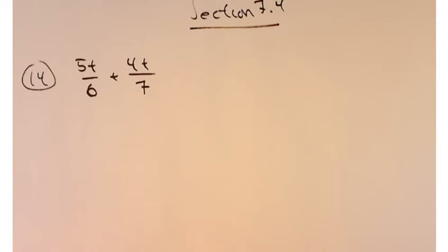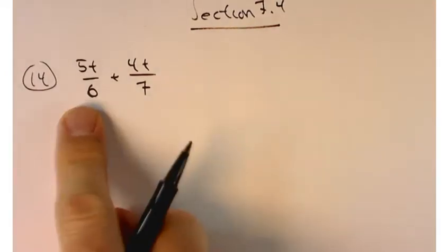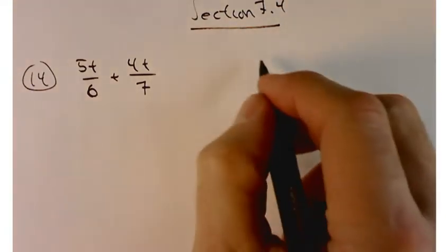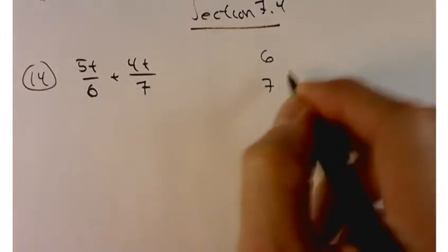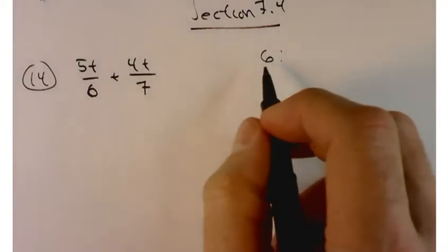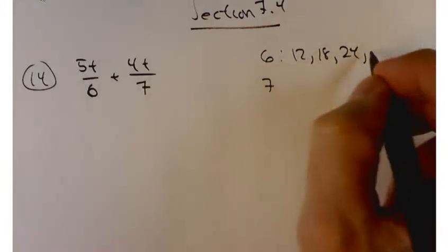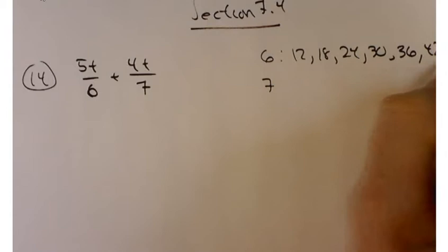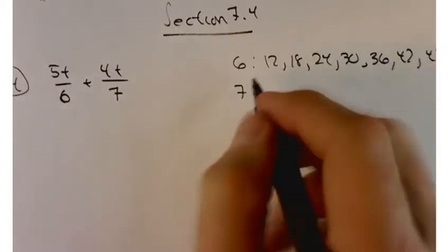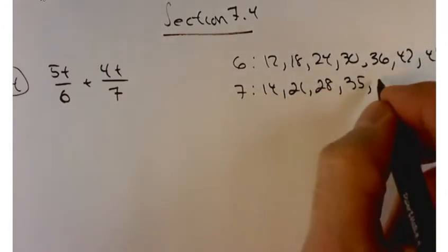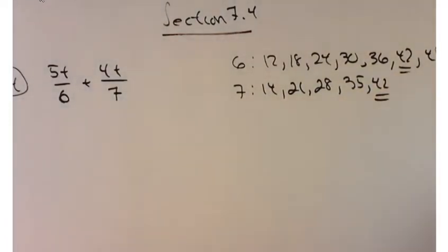We'll begin with problem number 14. We've got denominators of 6 and 7, so it's a simple thing to figure out an LCD. We talked about that in section 7.3. One way to find the LCD is to list multiples: multiples of 6 are 12, 18, 24, 30, 36, 42... and multiples of 7 are 14, 21, 28, 35, 42. We stop here because 42 is in common. So 42 is your lowest common denominator.